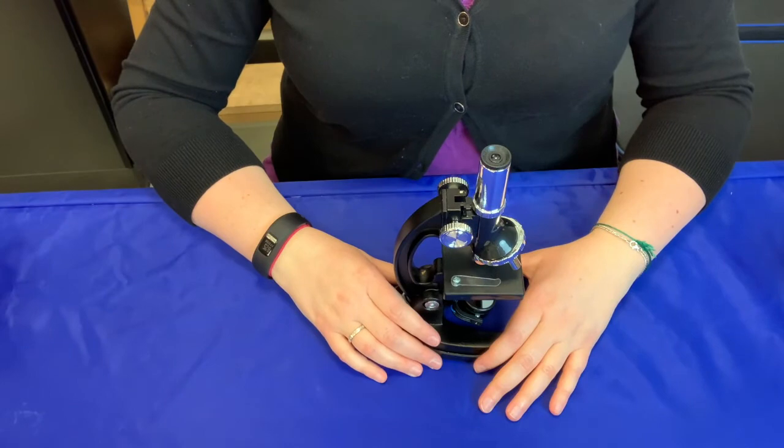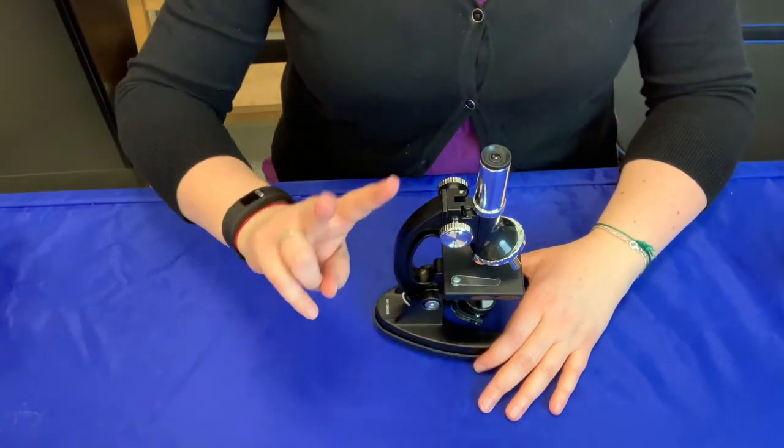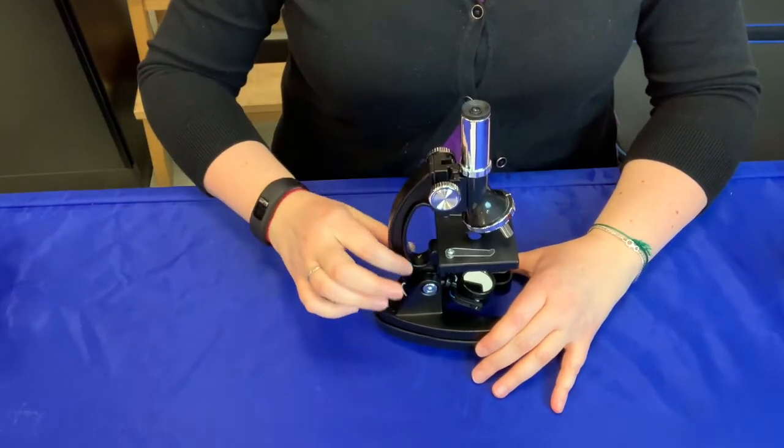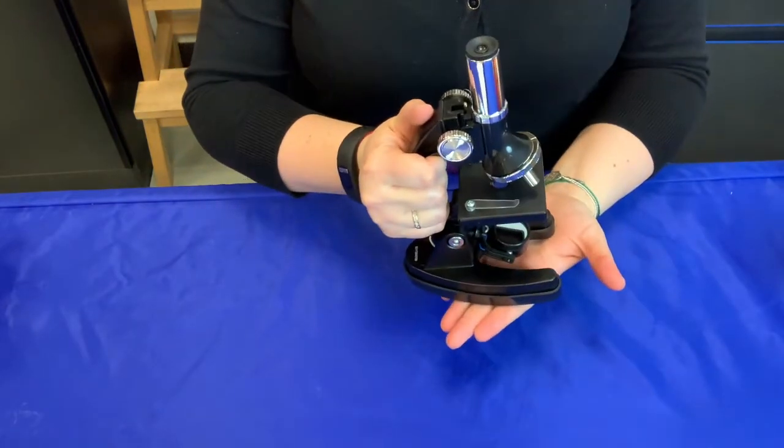When moving the microscope around, you should always use two hands. One on the arm, which is this piece here, and one under the base or the bottom.